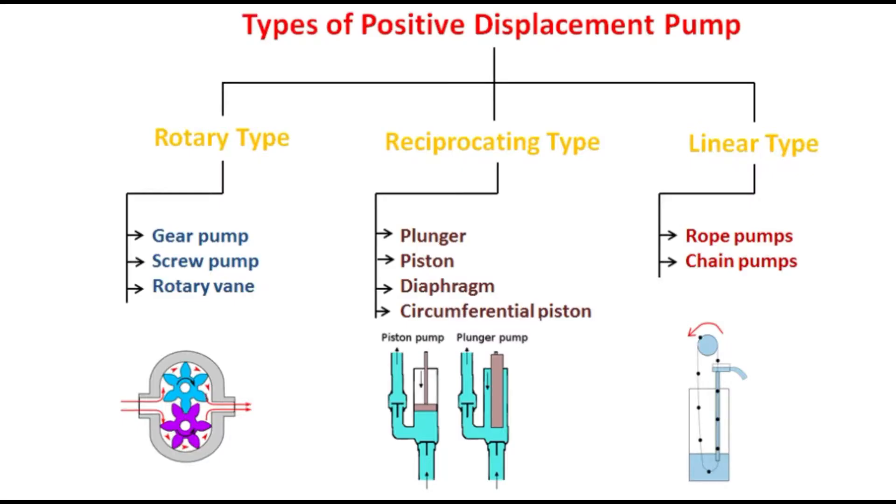Let's see about positive displacement pumps. A positive displacement pump makes a fluid move by trapping a fixed amount and forcing that trapped volume into the discharge pipe.